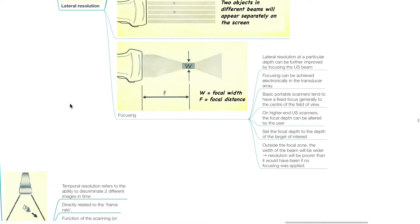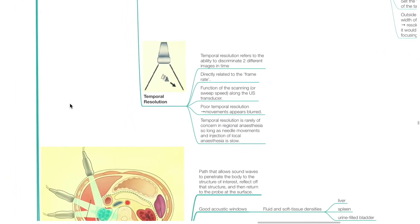Set the focal depth to the depth of the target of interest. Outside the focal zone, the width of the beam will be wider, and resolution will be poorer. Temporal resolution refers to the ability to discriminate two different images in time; it is directly related to the frame rate and is a function of the scanning or sweep speed along the ultrasound transducer. Poor temporal resolution results in movements appearing blurred. Temporal resolution is rarely of concern in regional anesthesia so long as needle movements and injection of local anesthetic are slow.